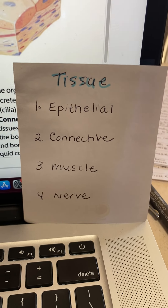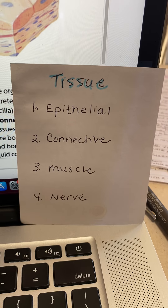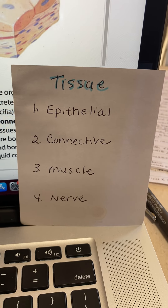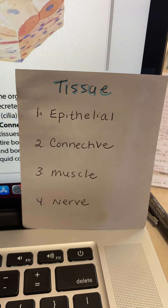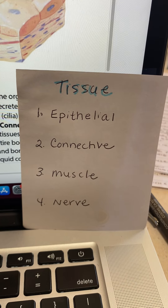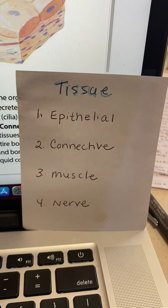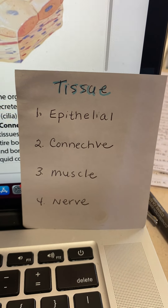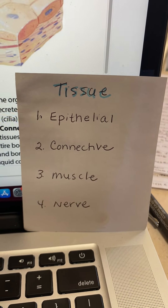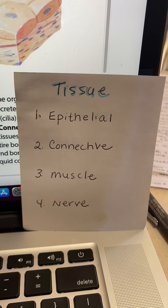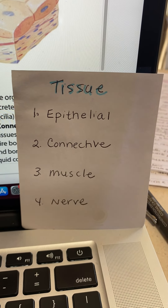The third type is muscular tissue — muscle moves the body and its parts. Then we have nerve tissue, which controls the organ and coordinates its function. So the four types of tissue are: epithelial, connective, muscle, and nerve. You need to know those four.